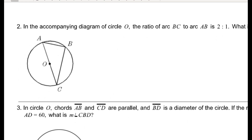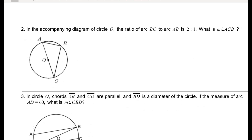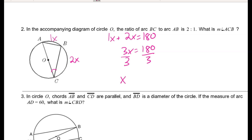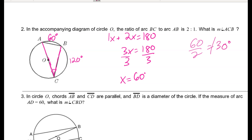For problem 2, in circle O the ratio of arc BC to arc AB is 2 to 1. Label arc AB as x and arc BC as 2x. Since AC is a diameter, both arcs sum to 180 degrees, so 3x equals 180 and x equals 60. Arc AB is 60 degrees and arc BC is 120 degrees. For the inscribed angle at C intercepting arc AB, taking half of 60 gives 30 degrees.